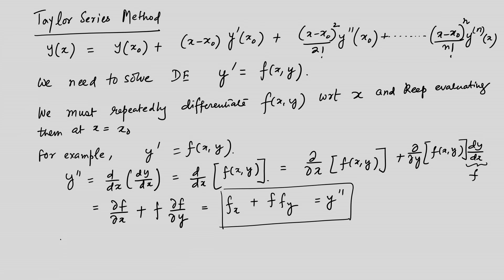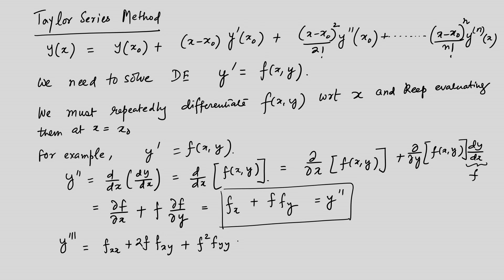Similarly, the third derivative can be found by taking one more derivative with respect to x, giving y''' = fₓₓ + 2f·fₓᵧ + f²·fᵧᵧ + fₓ·fᵧ + f·fᵧ², where fₓₓ = ∂²f/∂x², fₓᵧ is the mixed derivative, fᵧᵧ = ∂²f/∂y². These are the higher derivatives which can then be substituted into the Taylor series expansion — call this equation 1.